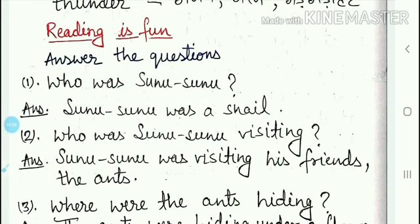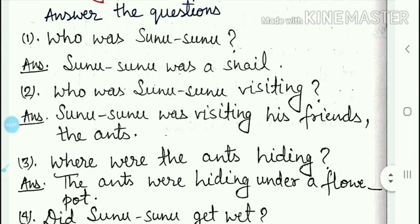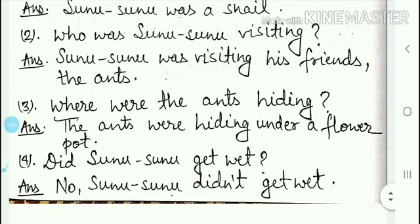Sunu Sunu kon tha? The answer is: Sunu Sunu was a snail. The second question is: who was Sunu Sunu visiting? The third question is: where were the ants hiding? The answer is: the ants were hiding under a flower pot.